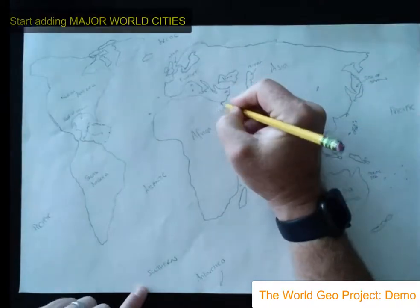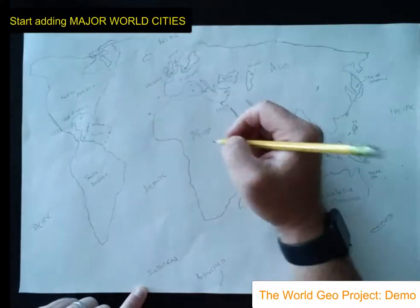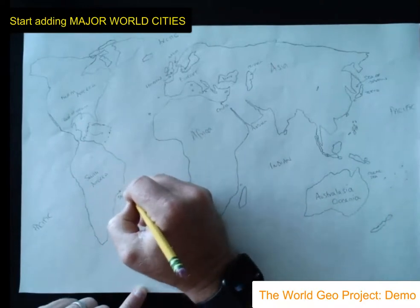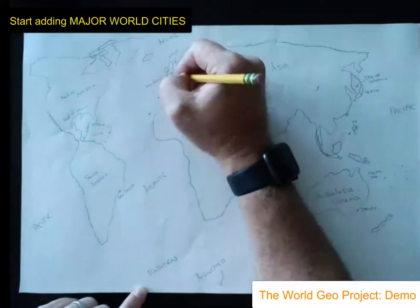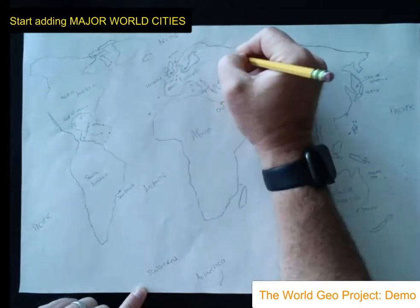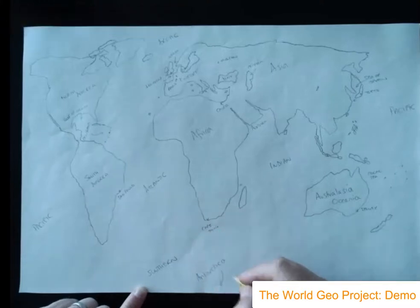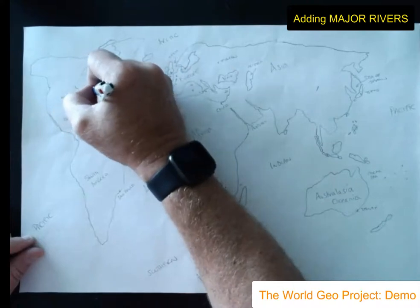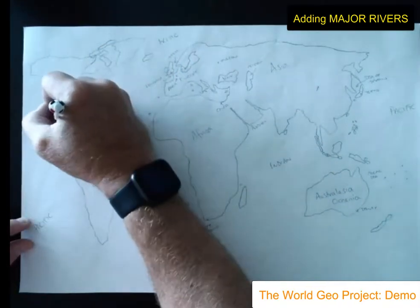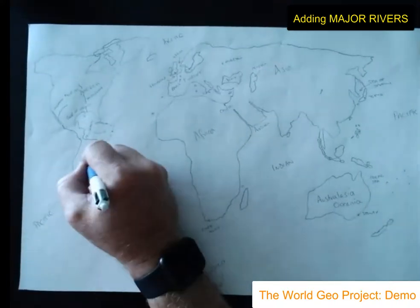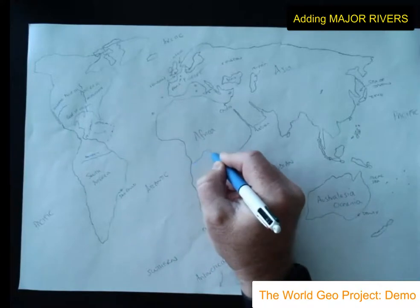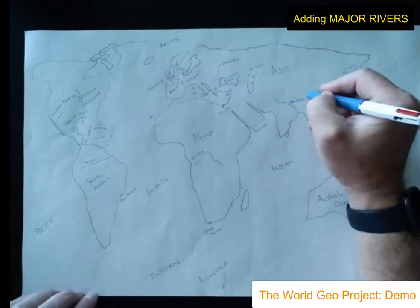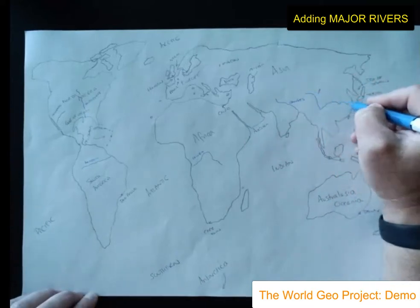I could add more, but we had time constraints based on lessons. Then we add major world cities — places like Cairo, Tokyo, São Paulo, Paris, London, Sydney, and Cape Town — trying to include a variety from different parts of the world. Then we add the major rivers, figuring out where they start and where they finish at their deltas, usually emptying into a major ocean: the Mississippi, the Amazon, the Congo, the Yangtze, the Danube, the Rhine, and the Ganges.